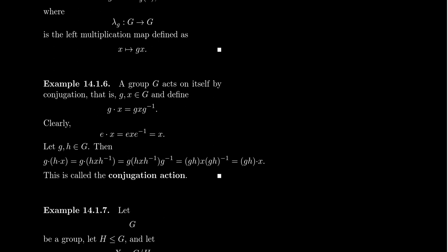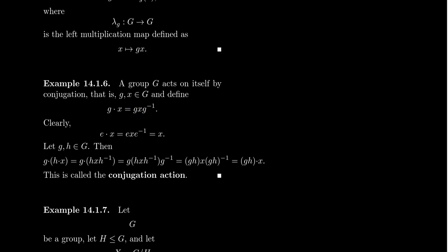Another very important example of a group acting upon itself — this time not by left or right multiplication — is conjugation. So g dot x is defined as the conjugate: g x g⁻¹. You have to be careful with ordering: if g⁻¹ is on the right and g is on the left, this gives a left action; if g⁻¹ is on the left and g is on the right, that gives a right action. To be consistent with left actions, we should have g⁻¹ on the right.